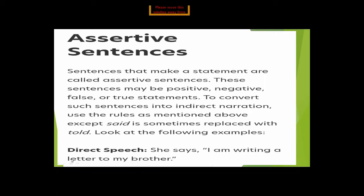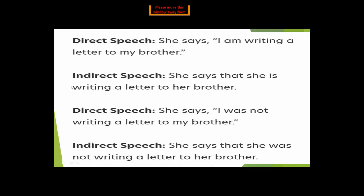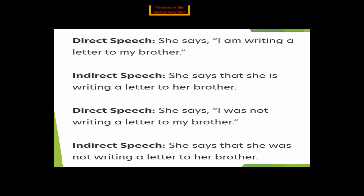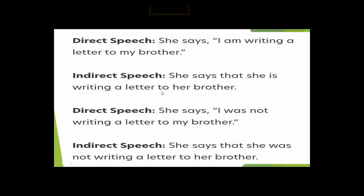In assertive sentences, we use 'that' as a connective and commonly change 'say' or 'said' with 'told.' In the example 'She says, I am writing a letter to my brother,' the indirect form is 'She says that she is writing a letter to her brother.' The pronoun 'I' changes to 'she' according to the subject of the reporting speech, and 'my' changes to 'her.'